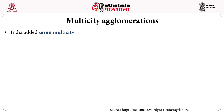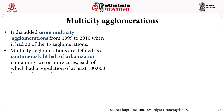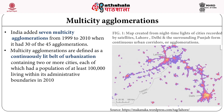Now we come to multi-city agglomerations. Multi-city agglomerations are a continuous belt of urbanization containing two or more cities, each of which had a population of at least one lakh living within its administrative boundaries in 2010. India added seven multi-city agglomerations from 1999 to 2010, when it had about 30 of the 45 urban agglomerations. You can see from this map the multi-city urban agglomerations.